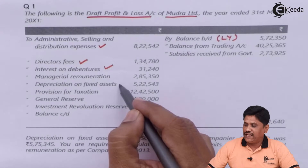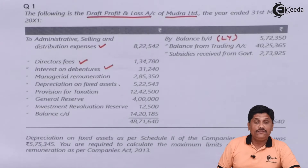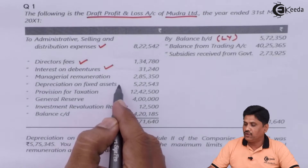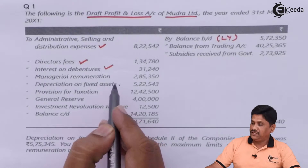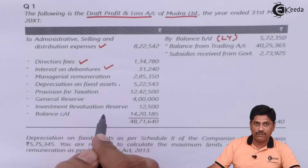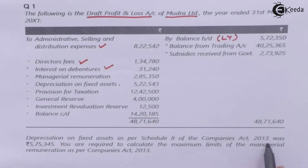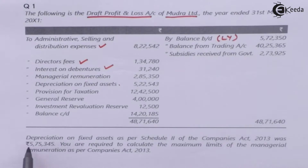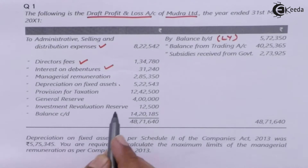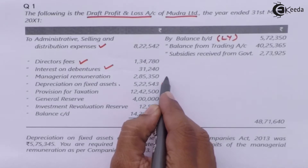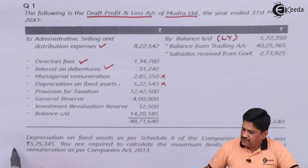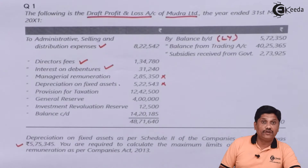Depreciation on fixed assets is as per the books. If it is separately given as per the company's accounts, that depreciation will be ignored. Otherwise, we can safely assume the depreciation is as per the provisions of the Companies Act. In our question, depreciation on fixed assets as per Schedule 2 of Companies Act 2013 is 575,345 — this is the allowable depreciation to be considered.